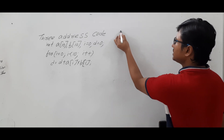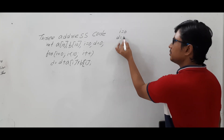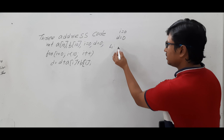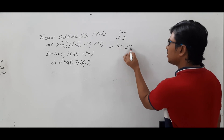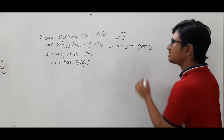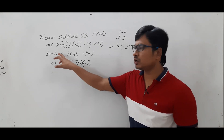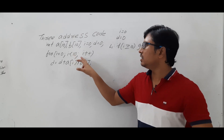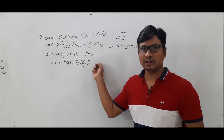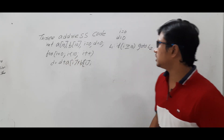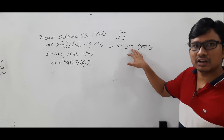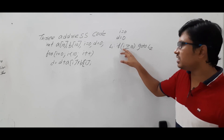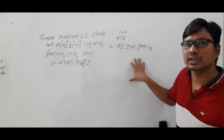First, assign the initial values: i = 0 and d = 0. Then take label L1. Write: if i >= 10 goto L2. This means the for loop starts at i = 0 and whenever i becomes 10 or greater, you stop the loop. If i is less than 10, you execute the loop body. So if the condition i >= 10 is satisfied, go to L2; if it fails, meaning i < 10, execute the statements.